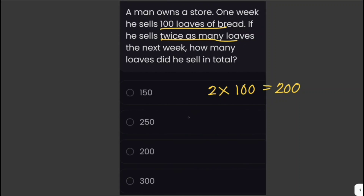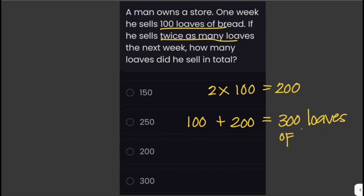That would be 100 loaves for the first week plus 200 loaves for the next week, giving us 300 loaves of bread in total. So the man sold a total of 300 loaves of bread.